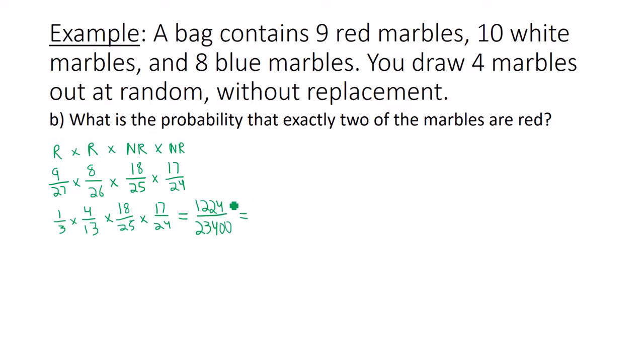And this is not my final answer, but just an intermediate step to get me there. So do not round whatever this is. It is actually going to be 0.052307. But wait, this is just one possible way that you could get two red marbles when you draw out four. So the first two could be red, last two could not be red. Let's list some other outcomes where exactly two of the marbles are red.